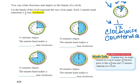A full turn completely around a clock is 360 degrees. Now, here it says you can relate fractions and angles to the hands of a clock. Let the hands of the clock represent the rays of an angle. Each five minute mark, or each time it moves to a new number, is representing a 1 twelfth degree turn clockwise.